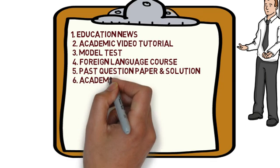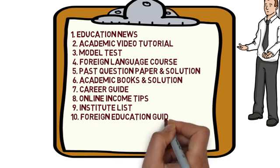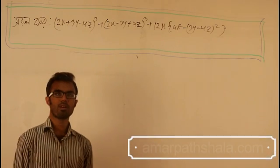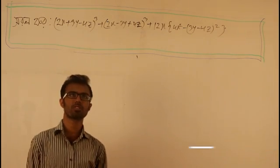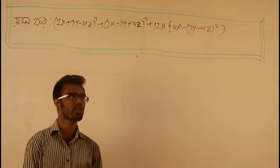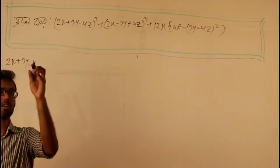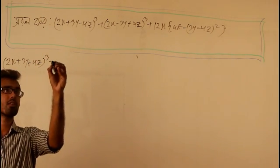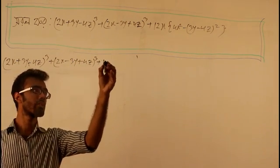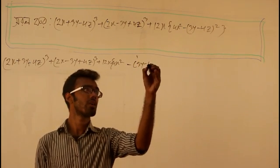Thank you for joining us. 3y minus 4z cube. 2x minus 3y plus 4z cube plus 12x into 4x square minus 3y minus 4z square.